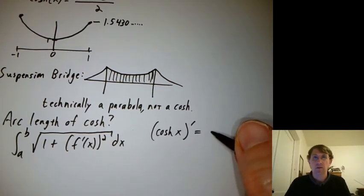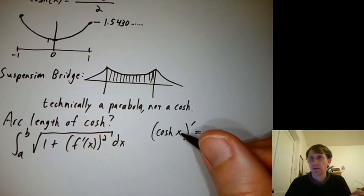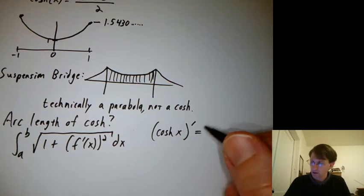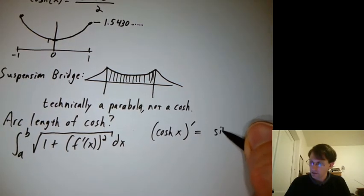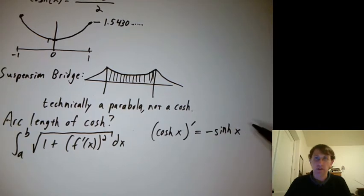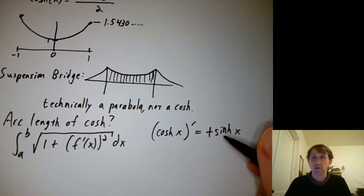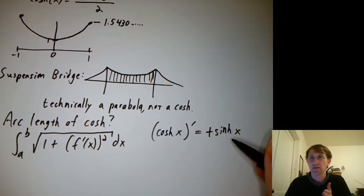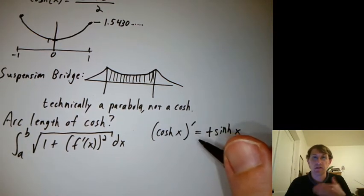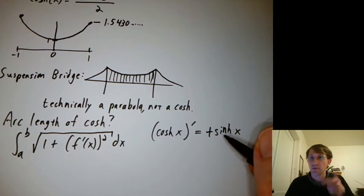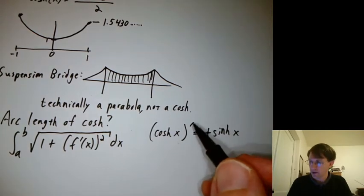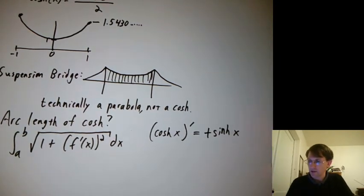Well, you might guess the derivative of cosine is sine, negative sine. So you might guess it's sinh of x with a negative there. But it turns out there's actually a positive there. That's one interesting difference between cosine and sine, cosh and sinh. You don't end up with the negatives when you take derivatives of cosh or sinh.